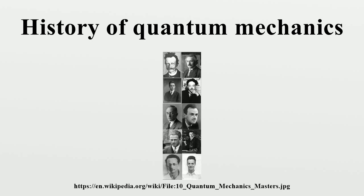Hungarian polymath John von Neumann formulated the rigorous mathematical basis for quantum mechanics as the theory of linear operators on Hilbert spaces. As described in his likewise famous 1932 textbook. These, like many other works from the founding period, still stand and remain widely used.